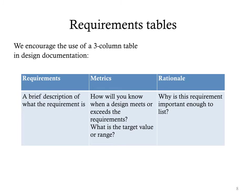The next section could either be design development or you could go straight into requirements. When you do come to the requirements, we like to use a three-column table format where you first have a brief description of what the requirement is, and then metrics. A metric is a value. If you assert that your design is easy to push — well, what's easy? Is it 10 kilograms? Or is it that any member of the team can push it without breaking a sweat for at least three minutes? If the bike should be lightweight — well, how light is light? And then finally, rationale is why this requirement is important to list. There's quite a bit more information about requirements on the wiki associated with the paper bike documents, and it's worthwhile to peruse that.